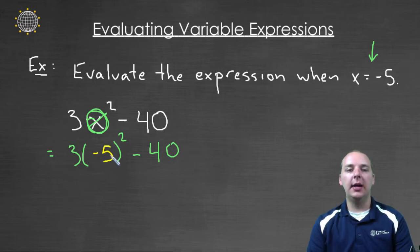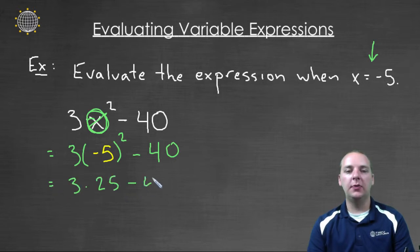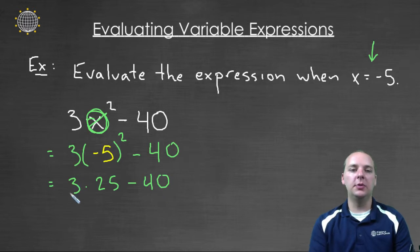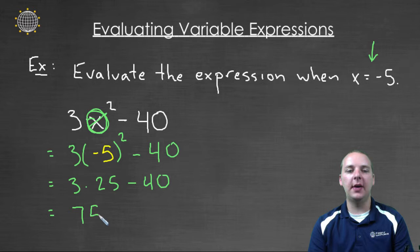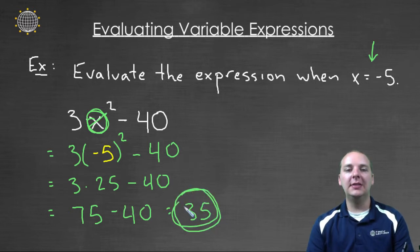So negative 5 squared is 25 so I'll have 3 times 25 minus 40. Next up comes multiplication. 3 times 25 is 75 minus 40. And last step, 75 minus 40 makes 35. So this is a particular variable expression evaluated when x was negative 5.